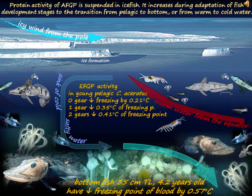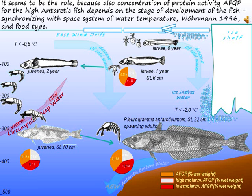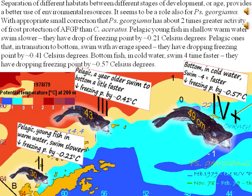Young fish with delayed activation of AFGP protein can avoid cold water. Activity of AFGP is suppressed in ice fish; it increases during adaptation of fish development stages in the transition from pelagic to bottom, or from warm to cold water. Concentration of AFGP activity for high Antarctic fish depends on the stage of fish development, synchronizing with the spatial system of water temperature (Wohrmann, 1996) and food. Separation of different habitats between different development stages and ages provides better use of environmental resources.